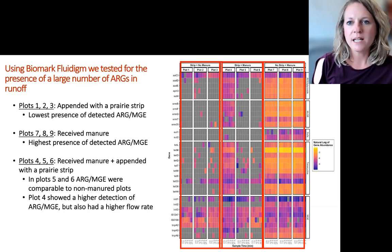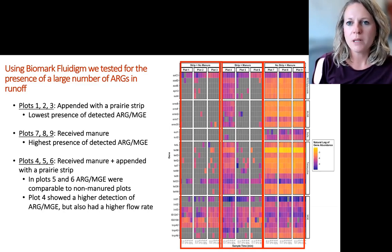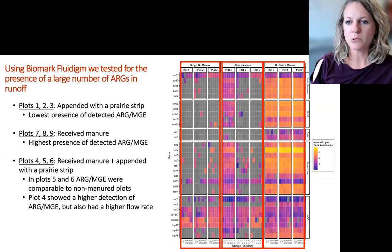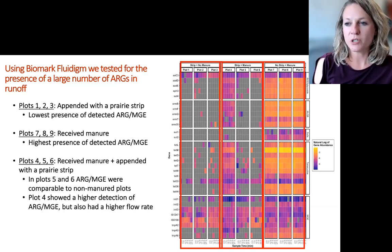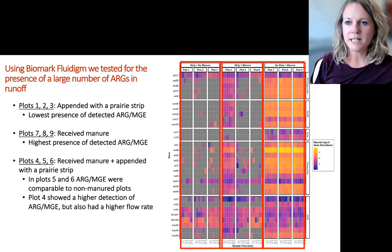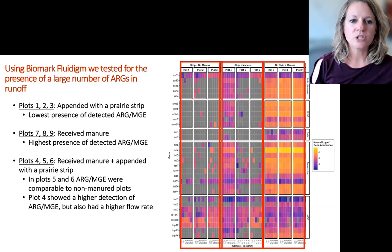Looking at the three treatments — strip plus no manure (plots 1, 2, 3), strip plus manure (where the prairie strip was treating manure and we collected downstream samples), and no strip but with manure — brighter yellows and oranges mean higher concentrations of genes detected, while grays and purples are lower concentrations. The strip plus no manure plots showed the lowest presence of antibiotic resistant genes and mobile genetic elements. Plots 7, 8, and 9 — the no-strip, manure plots — had the highest detection of both resistant genes and mobile elements.